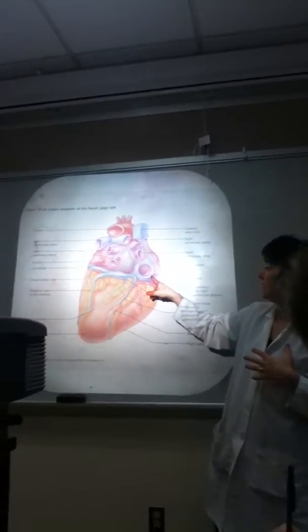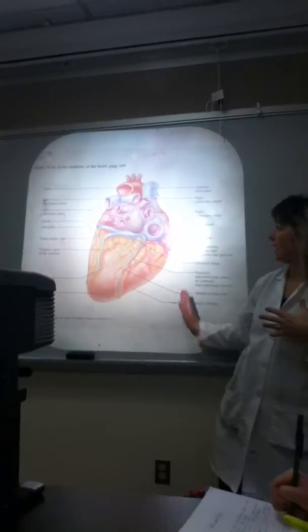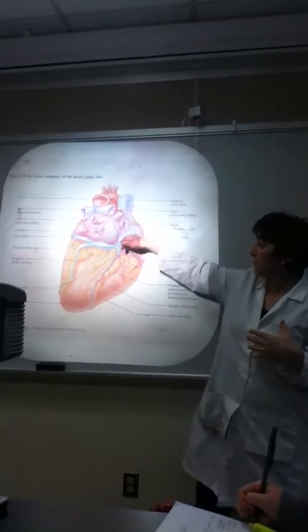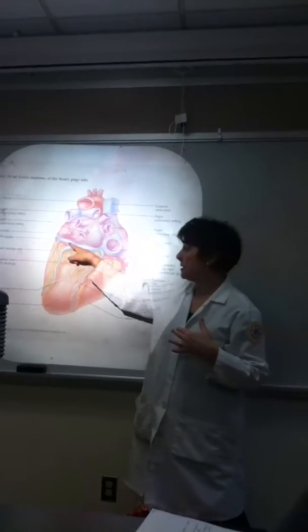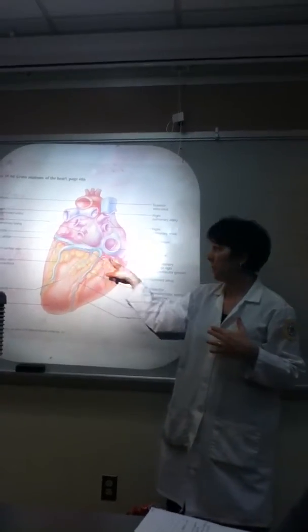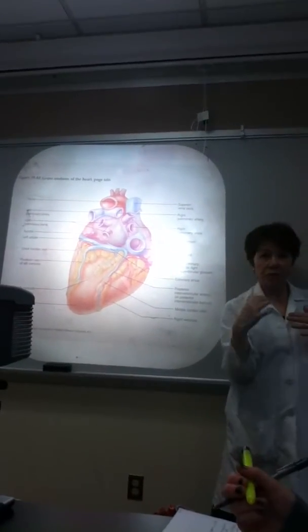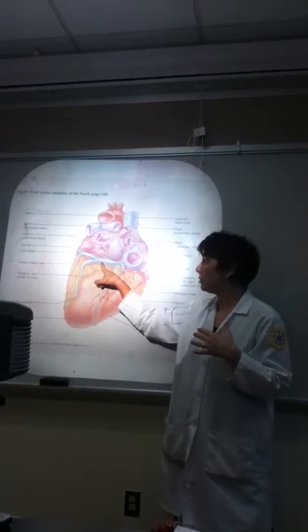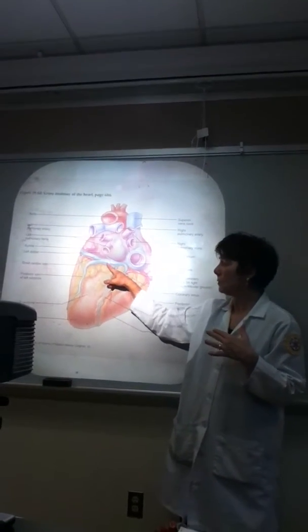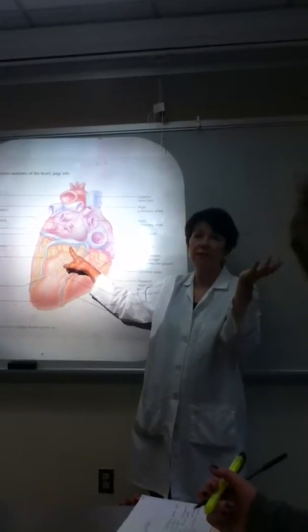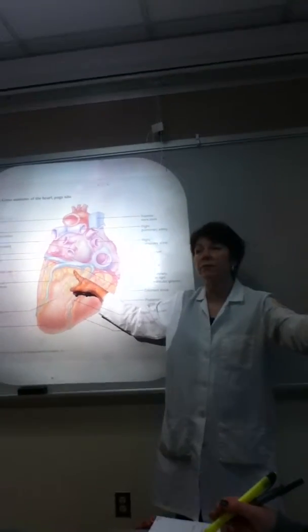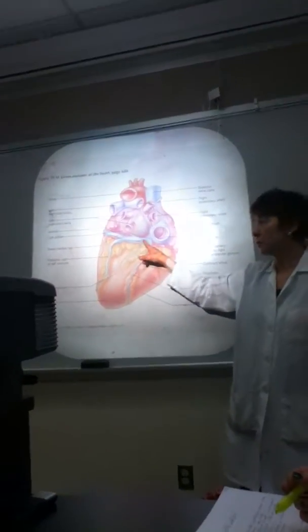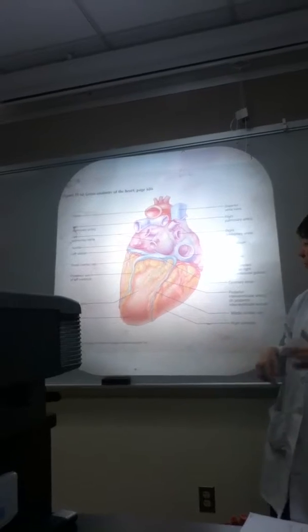This is the inferior vena cava coming up, superior vena cava coming in. This is the posterior atrioventricular sulcus, and in here is the coronary sinus. It's part of the circulation, and that's an important structure right there — the coronary sinus.